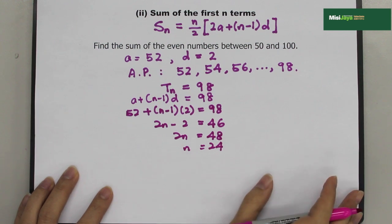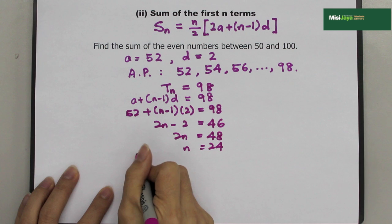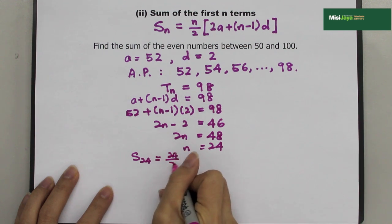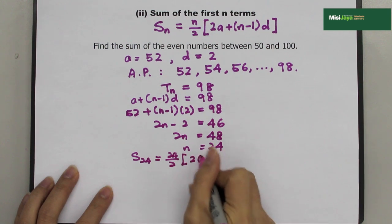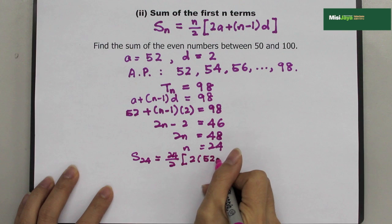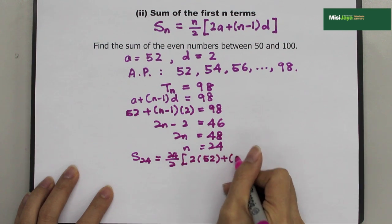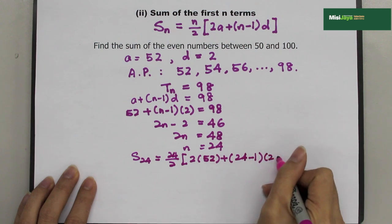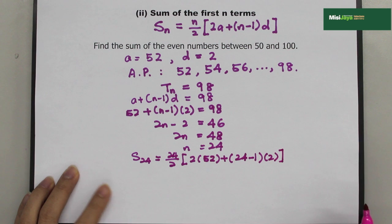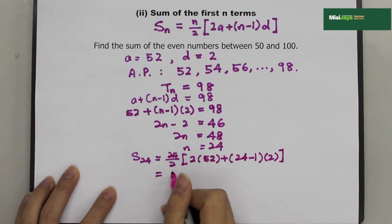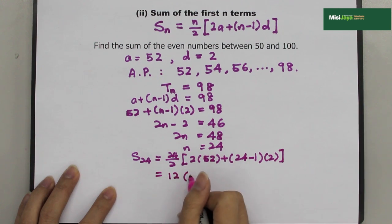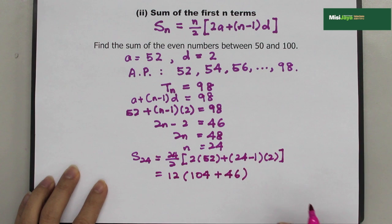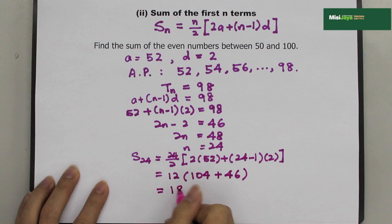From here, I can find SN. So S24 equals 24 over 2, bracket 2A plus N minus 1 times D. That gives 12 times bracket 104 plus 46. The final answer is 1,800.